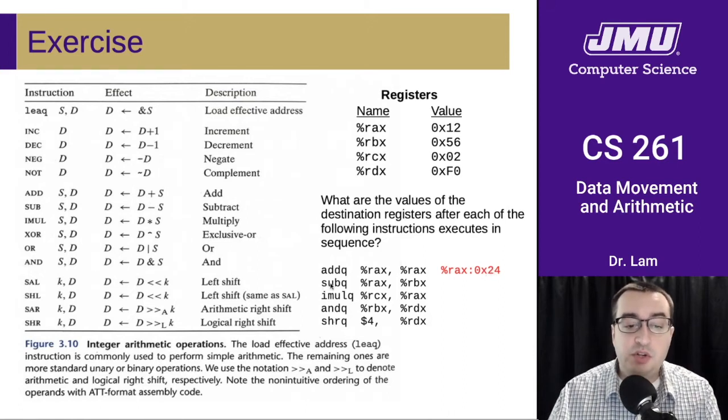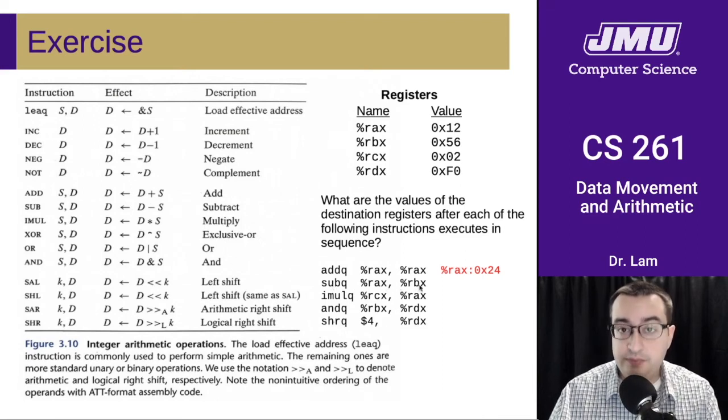Then we're going to subtract rax from rbx, changing rbx. So rbx is hex 56, so we subtract hex 24 from that, which gives us hex 32. So that's the new value for rbx.